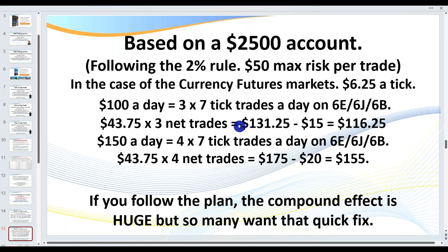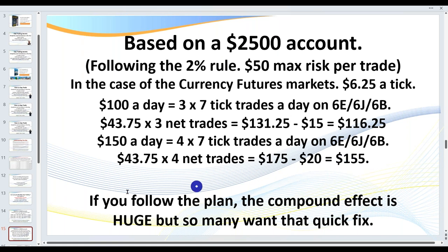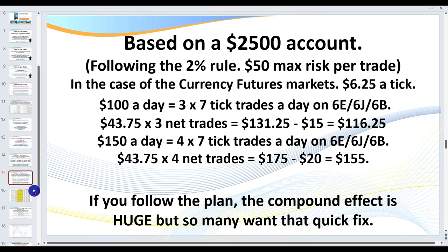I only need three net trades a day after commissions — that's $116. I'm after $100 net. Ideally I want to get my $150. If you're putting two hours a day in during peak times, you should be achieving that with experience — subject to markets dying when Fed speakers come on or with major red-flag news. If you want to average $150 a day, that's four seven-tick trades: $175 minus commissions equals $155. Extremely realistic.